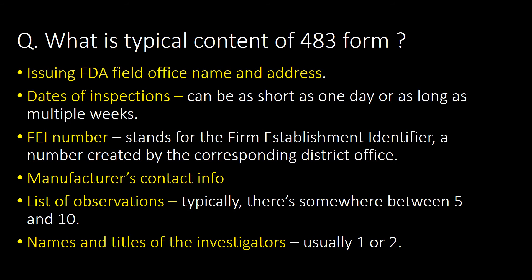What is the typical content of the 483 form? The 483 form typically contains the issuing FDA field office name and address, dates of inspections, FEI number, manufacturer's contact info, list of observations, and names and titles of the investigators.